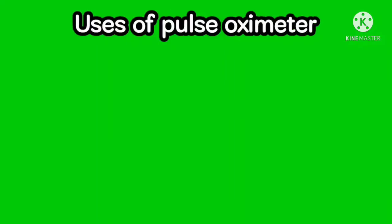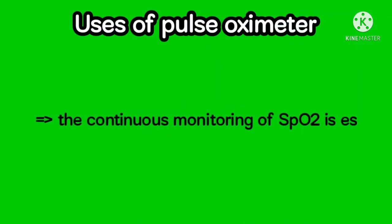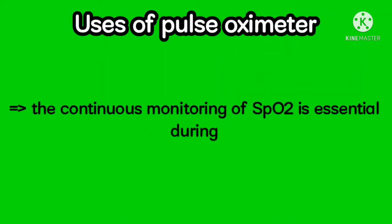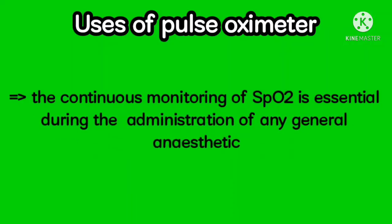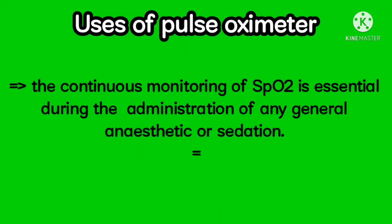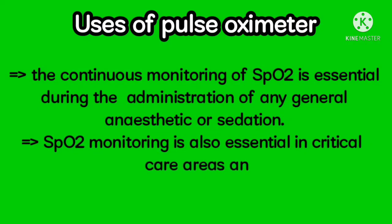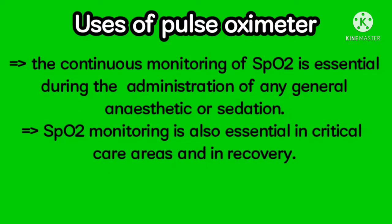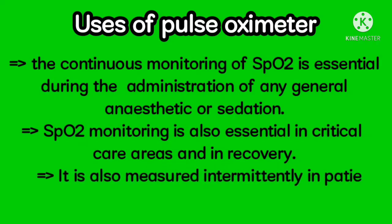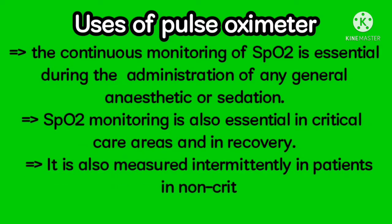Uses of Pulse Oximeter. The continuous monitoring of SpO2 is essential during the administration of any general anesthetic or sedation. SpO2 monitoring is also essential in critical care areas and in recovery. It is also measured intermittently in patients in non-critical care areas.